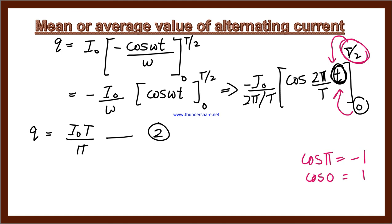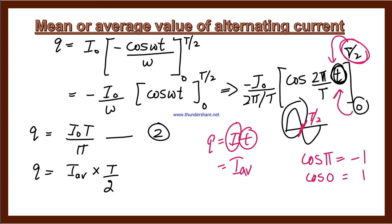The average or mean value of AC over the positive half cycle: the charge sent by the current is q equals I average multiplied by T divided by 2. For the positive half cycle, i is replaced by average current and time is T by 2. This is our third equation.